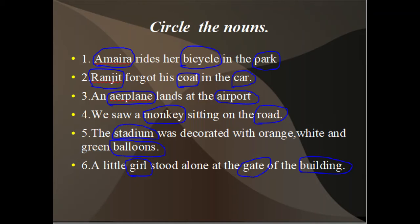So in sentence four, monkey and road refer to nouns. Sentence five: A stadium was decorated with orange, white, and green balloons. In this sentence, stadium is a place and balloons are things.